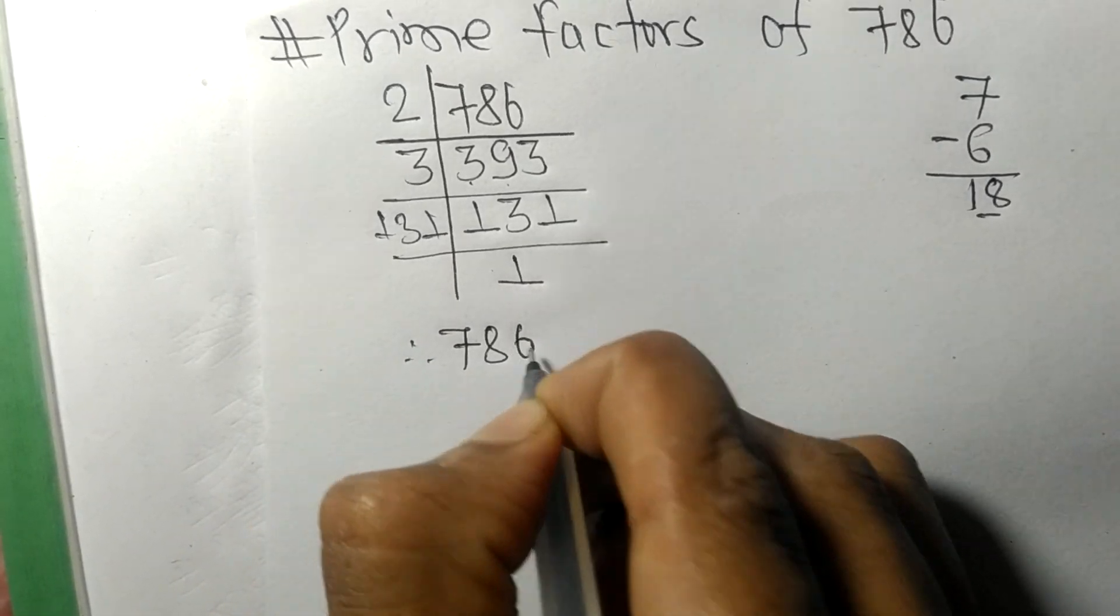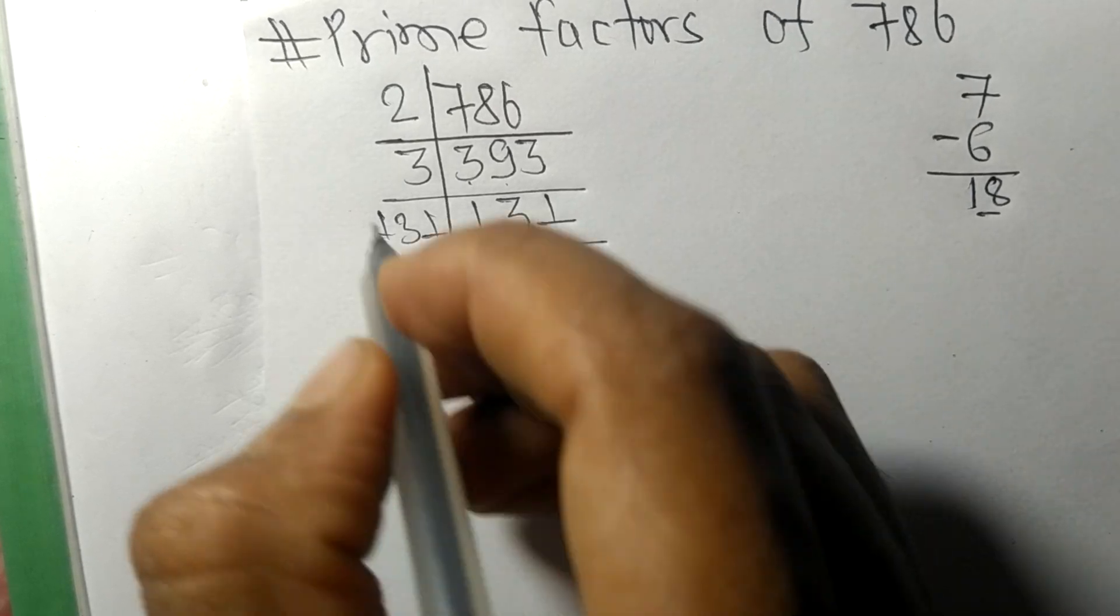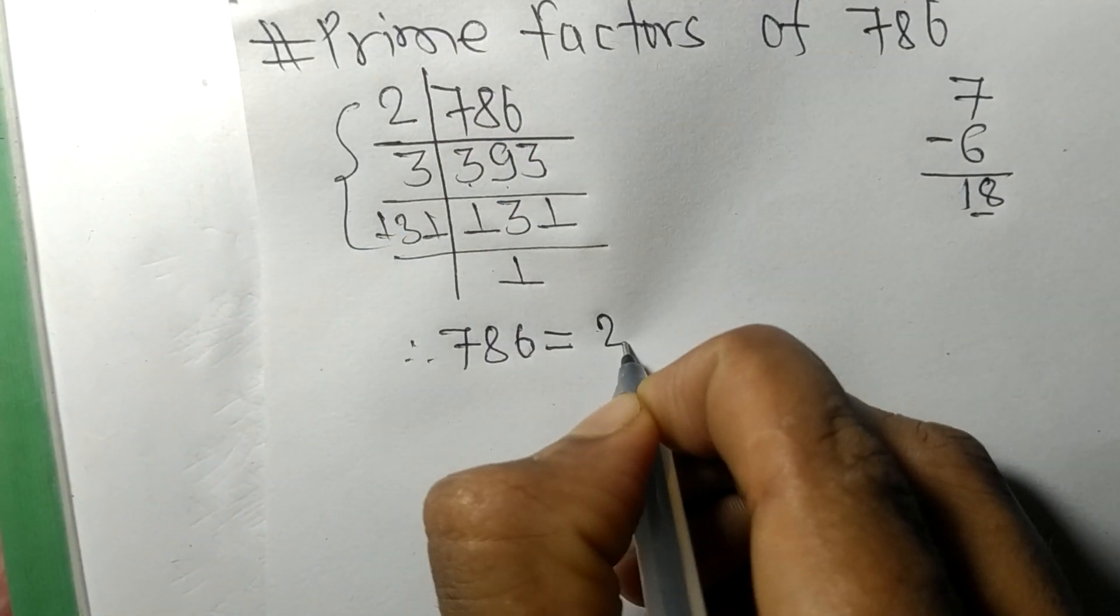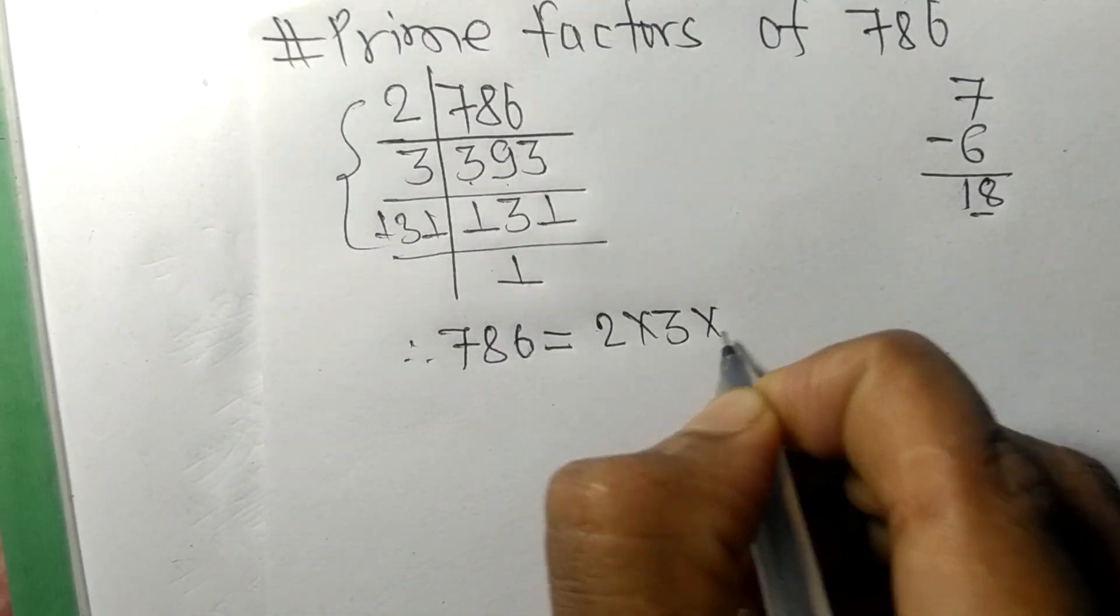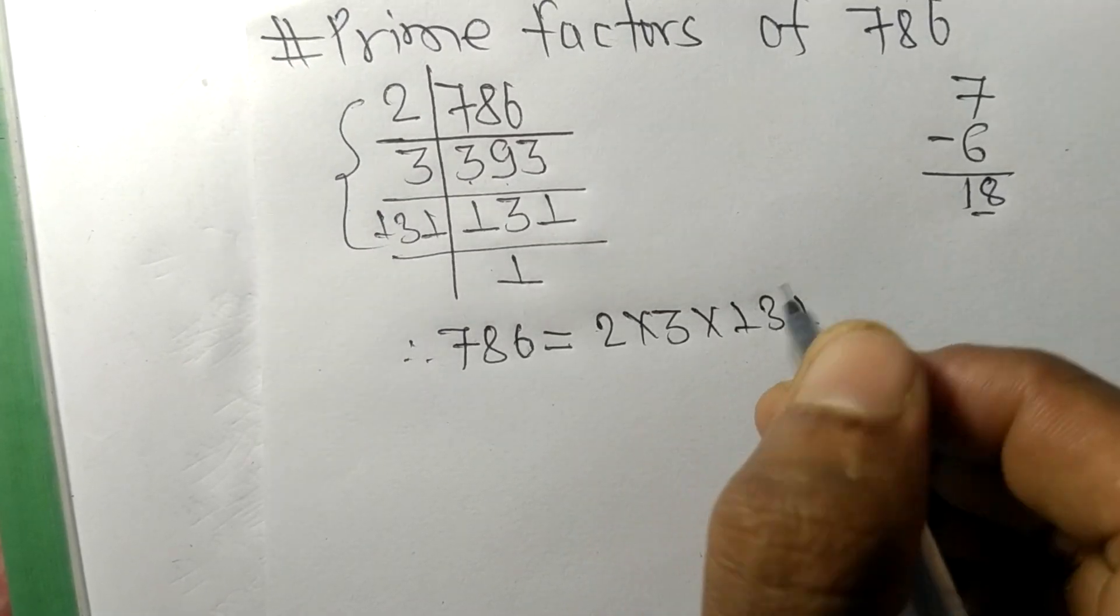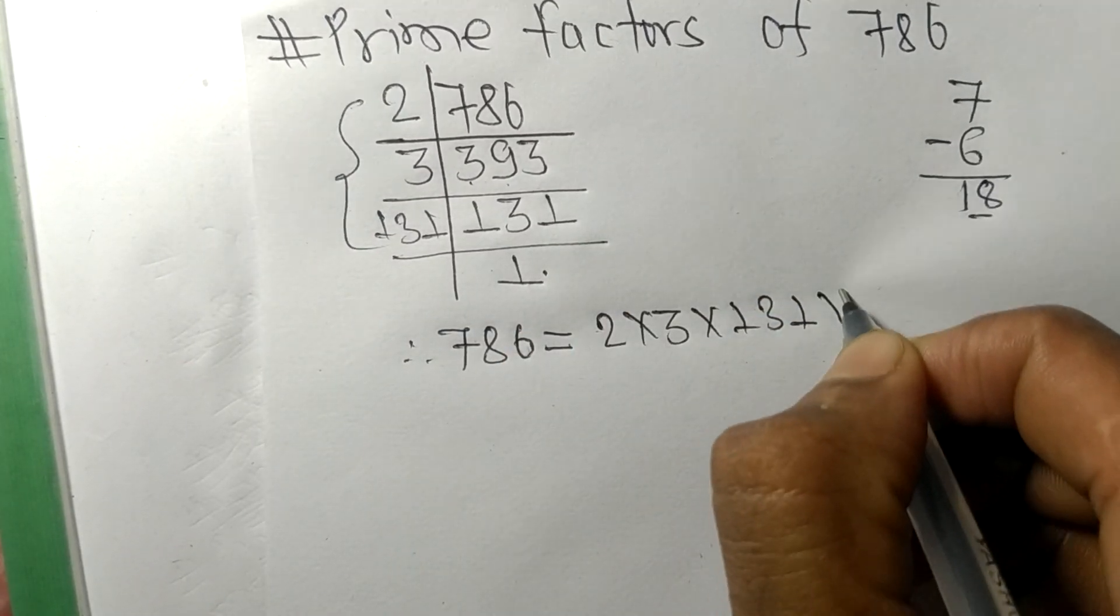786 is equal to 2 times 3 times 131 times 1.